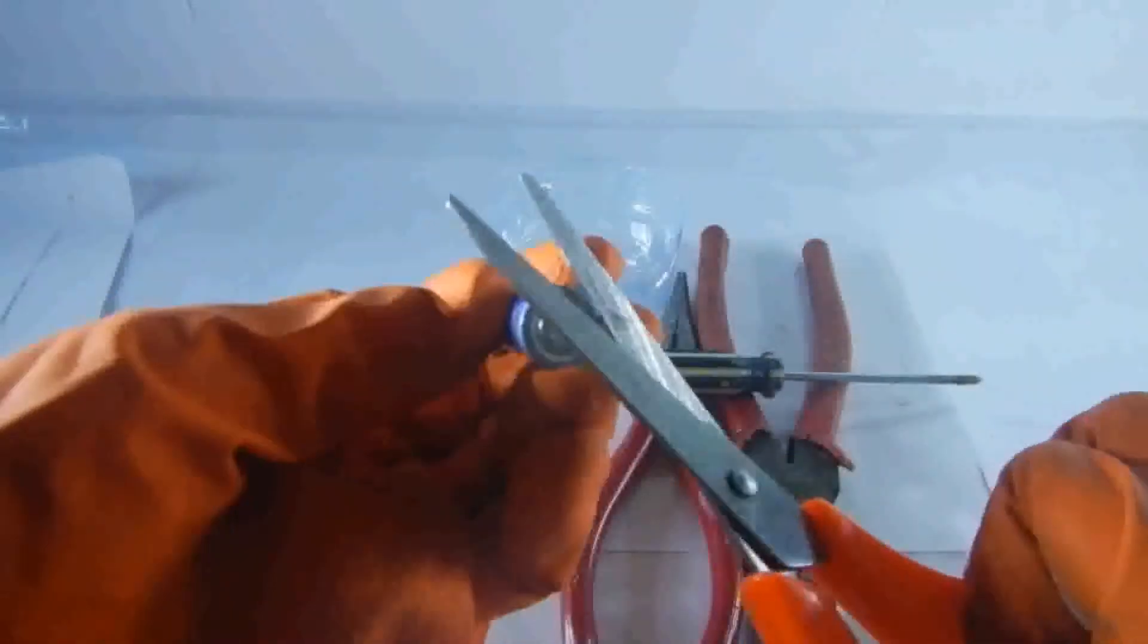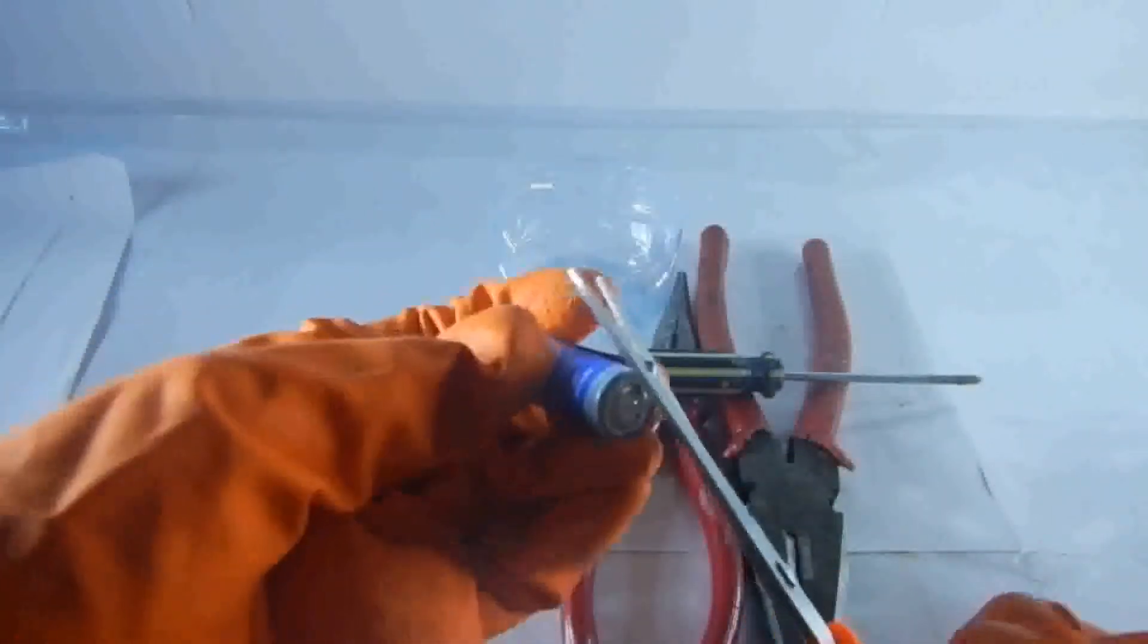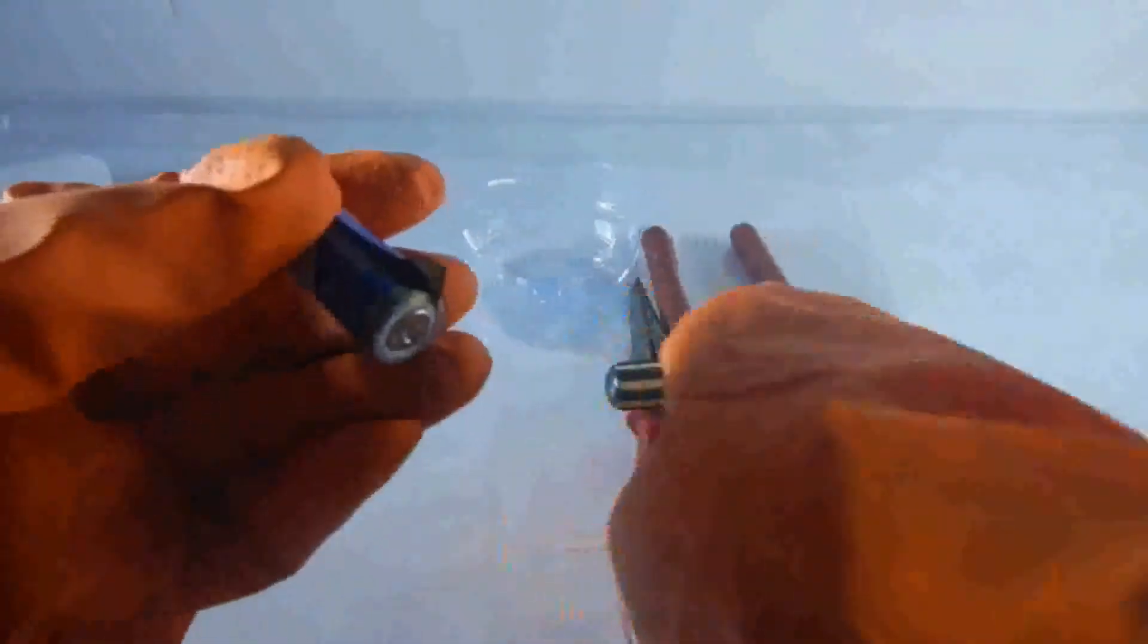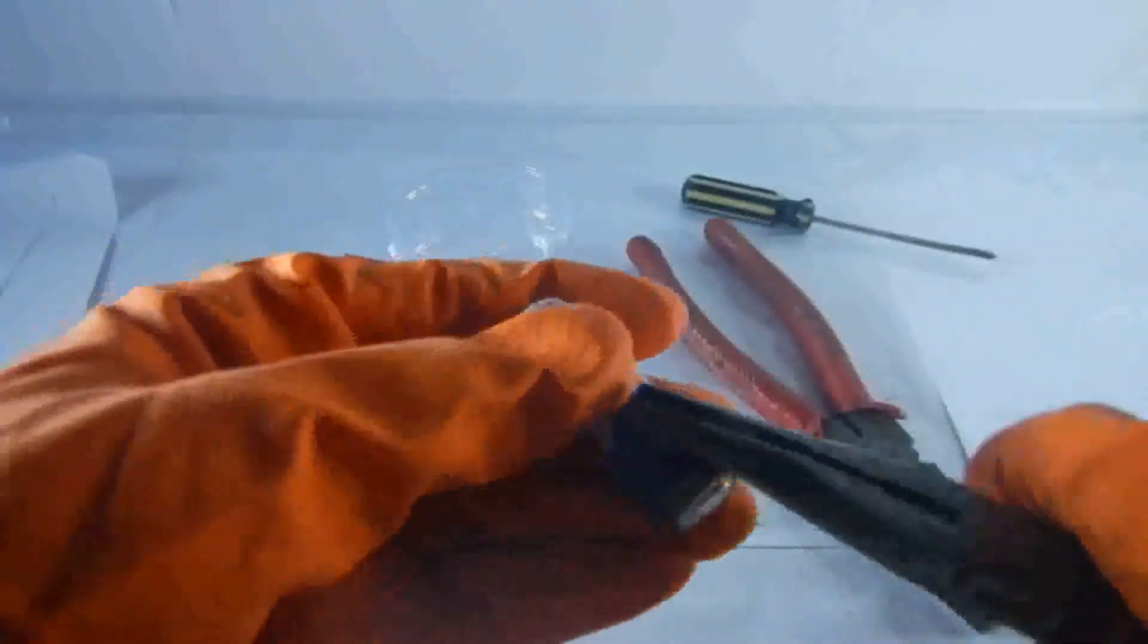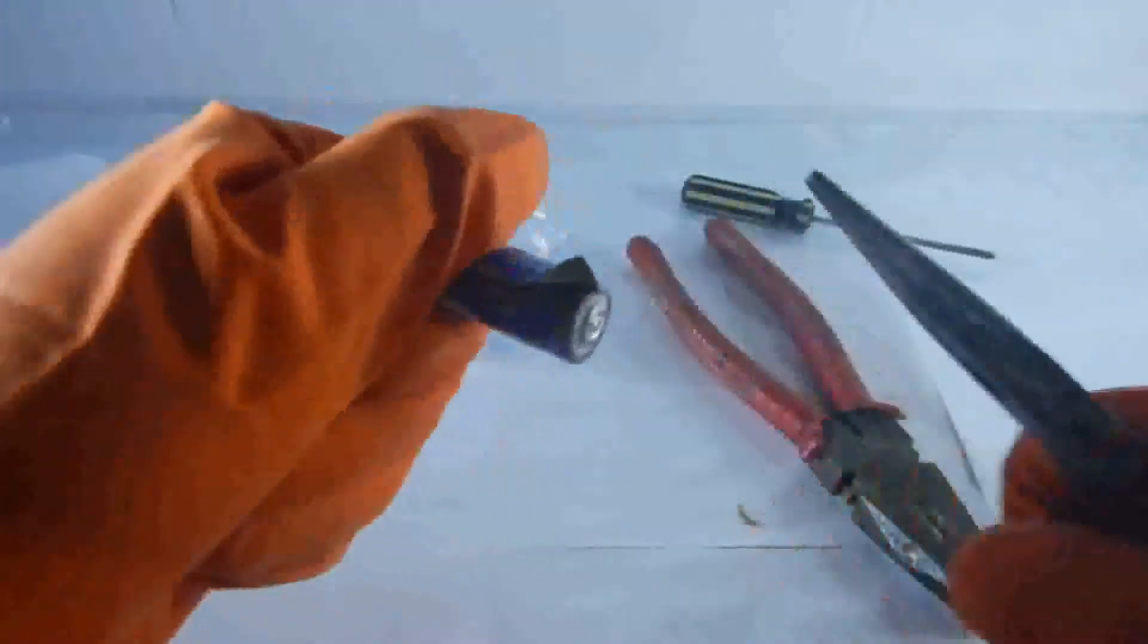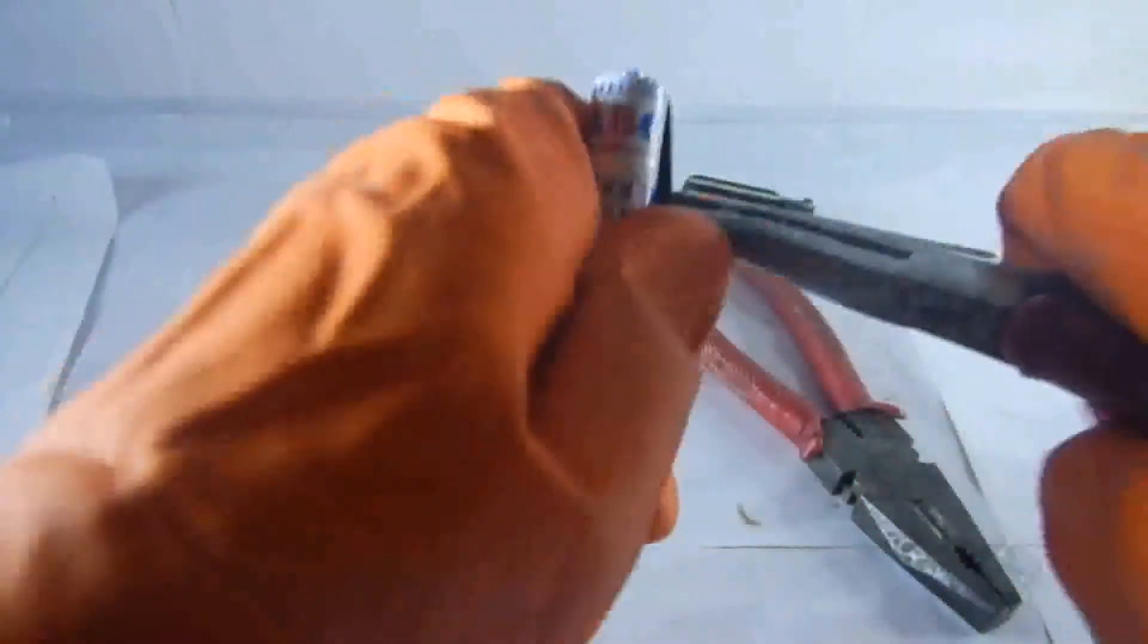We're going to start by peeling the outer case with a scissor, and then when we go to opening we're going to use a plier. It may be hard if you got a metal casing on the battery.